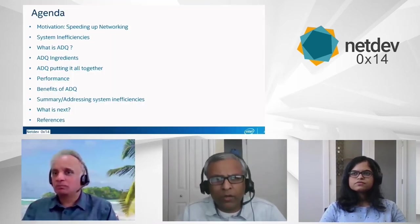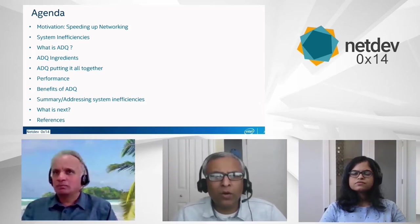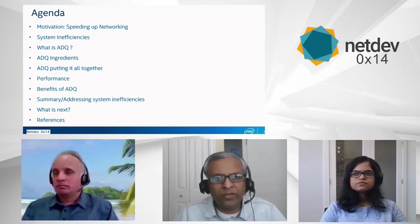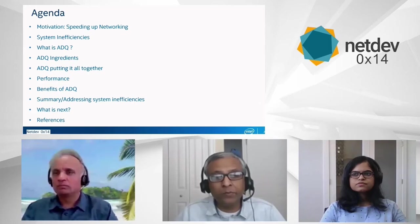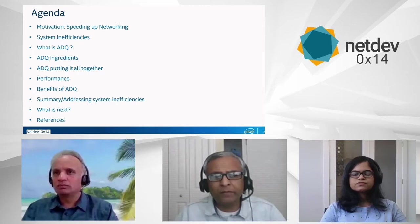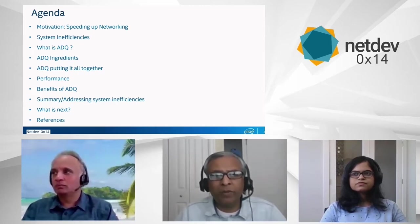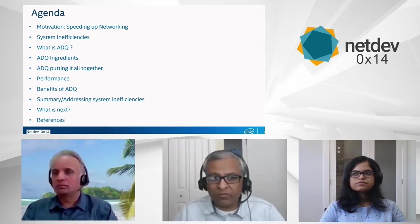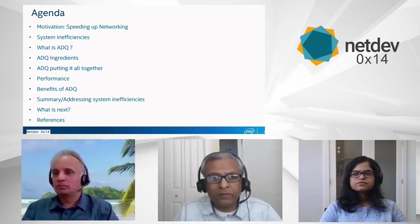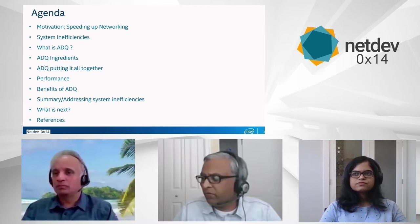As we go along, the agenda is going to be: what is the motivation of talking about this, what are all the system inefficiencies to solve the problem, a brief introduction about what is ADQ, the ingredients, putting it all together, and we will move on to the performance section and look at the high-level benefits of ADQ and translate it back to how the system inefficiencies are addressed, what is the next step, where do we go from here, and then at the end there will be references, and we'll open up for question and answer.